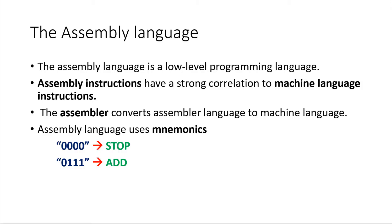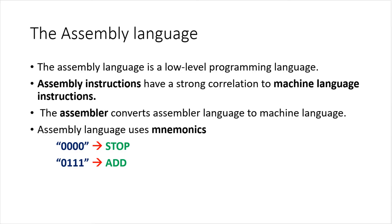In order for assembler instructions to be run on the circuits of a processor, the assembler instructions first need to be converted to machine language instructions. This is done by a special program called an assembler. The assembly language makes use of mnemonics, which are words that are intended to provide a shorthand for machine language instructions.